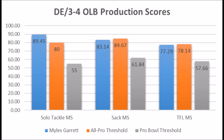Starting out with Myles Garrett's production, he had an 89.45 solo tackle market share production score. Based on my data since 1989, he hit every single threshold you could imagine in terms of a multiple all-pro and multiple pro bowl player. So he has at least all-pro potential based on solo tackle market share.